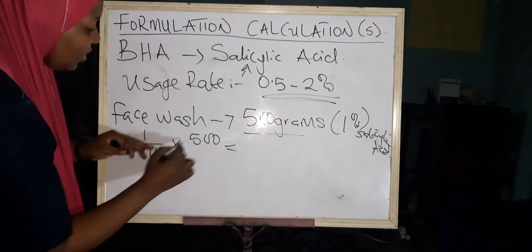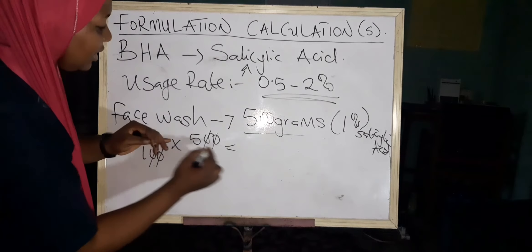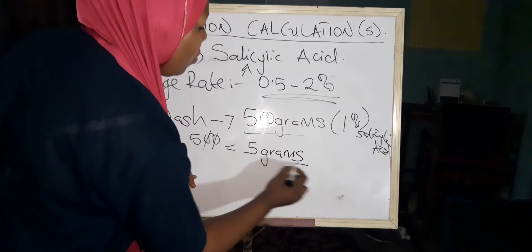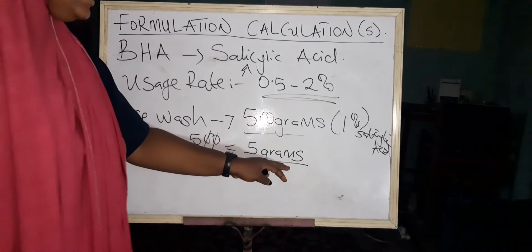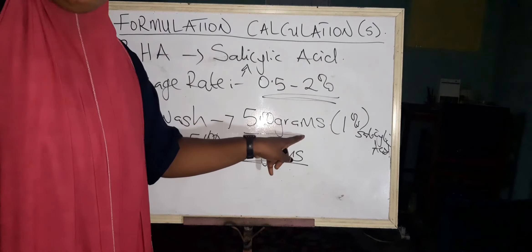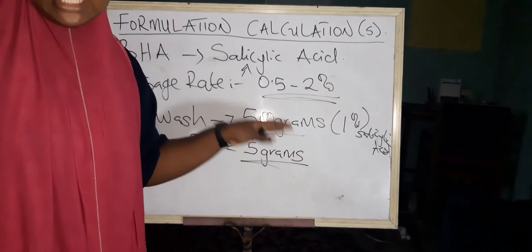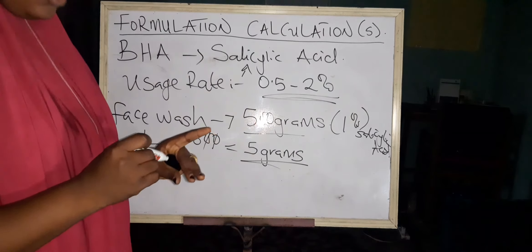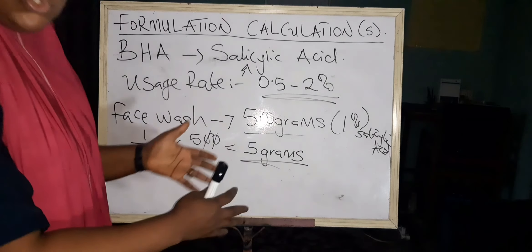This equals simple arithmetic, as I always say. This goes with this, and one times five is five. So you're getting 5 grams weight of salicylic acid that will be one percent of your 500 grams face wash. Is it clear?